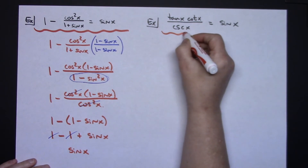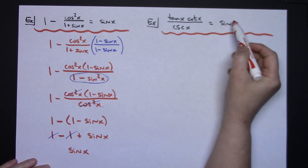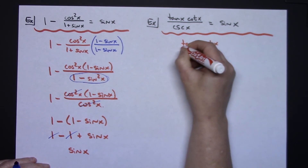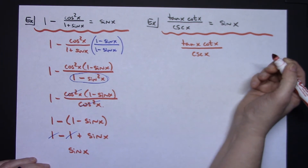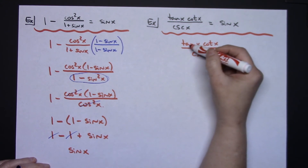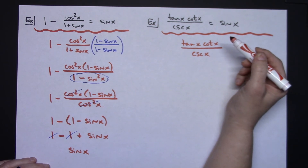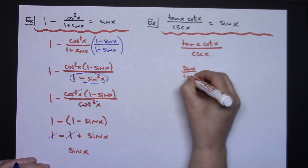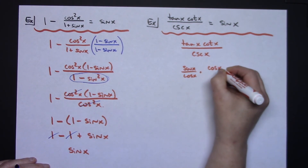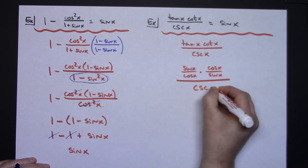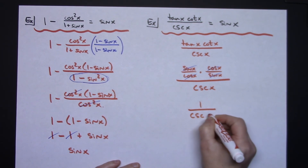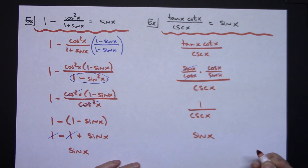For the last example, the left side is way more complicated than the right, so I'll start there. I have tangent x times cotangent x, all over cosecant x. Tangent and cotangent are reciprocals of each other, so substituting quotient identities: tangent is sine x over cosine x, cotangent is cosine x over sine x, all over cosecant x. In the numerator, cosines cross out and sines cross out, leaving just 1. So I have 1 over cosecant x, and since 1 over cosecant is the reciprocal identity for sine, that gives sine x.